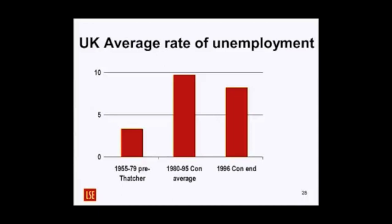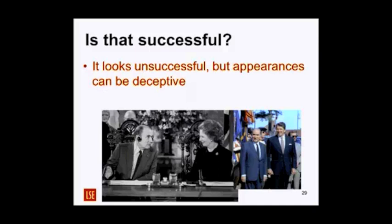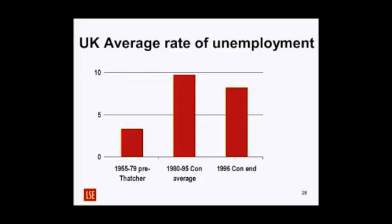High unemployment rates aided the implementation of union legislation that the previous Labour government tried but failed to implement until Thatcher came in. In terms of unemployment figures, they go up and they stay very high for a very long period of time.